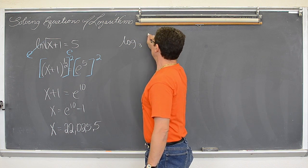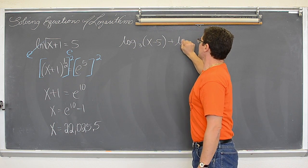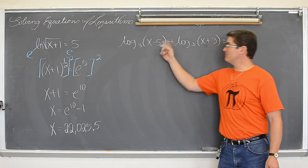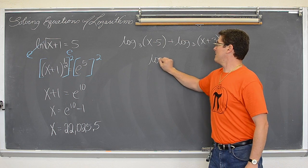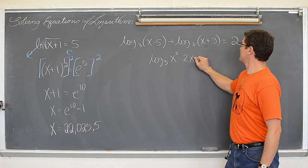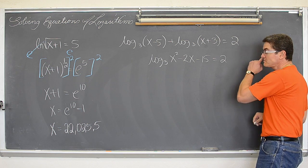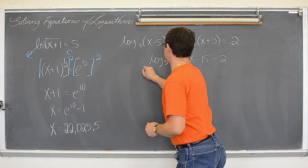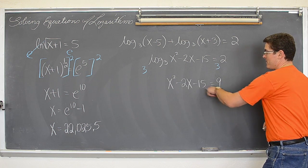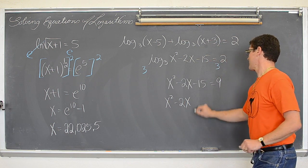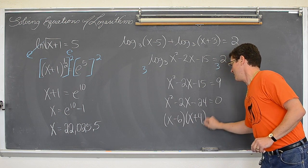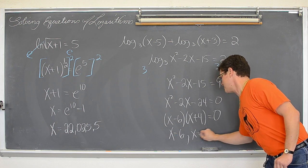We have log base 3 of x minus 5 plus log base 3 of x plus 3 equals 2. I am going to combine these two functions, I have two minutes left, and that is going to give me log base 3 of x squared minus 2x minus 15 equals 2. If I apply a power of 3 to both sides, I am going to get x squared minus 2x minus 15 equals 9. Subtract both sides by 9, I get x squared minus 2x minus 24 equals 0.